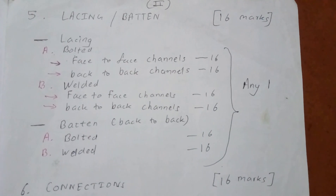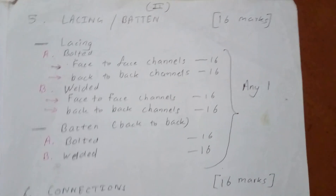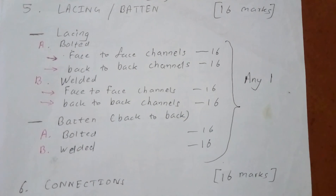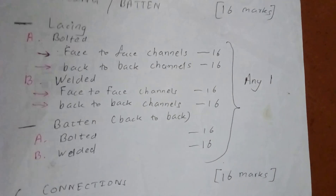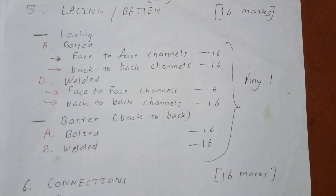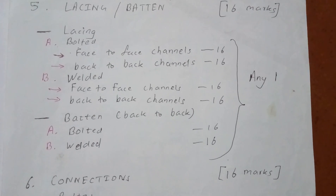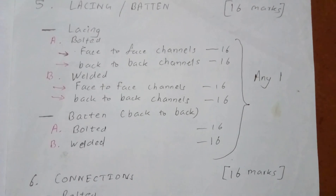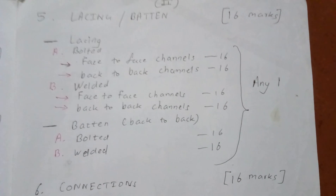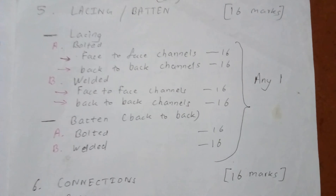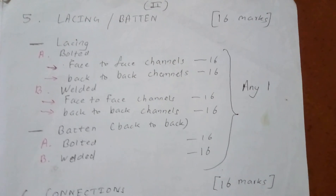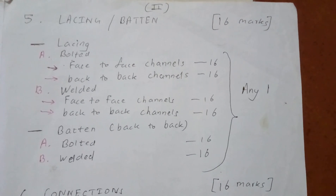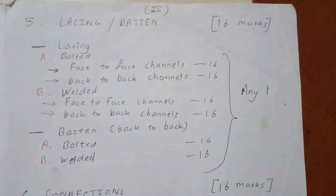The fifth topic is Lacing and Battens. In lacing, there are two types: bolted and welded connections, each with two sub-types — face-to-face channel and back-to-back channel. In battens, back-to-back channel is most commonly asked with bolted or welded connections. This results in around six different types of sums, and only one will be asked. I suggest not going for lacing and battens — it consumes time and gives very little output.